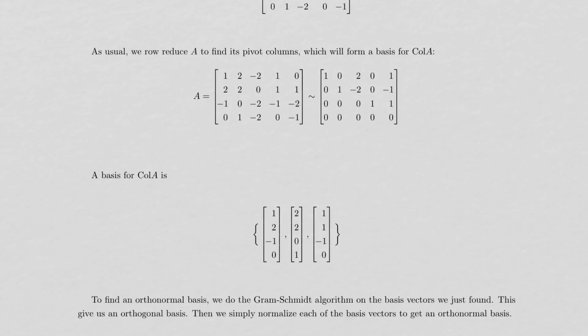So in this case, I can see I've got a pivot here, here, and here. So columns 1, 2, and 4 are the pivot columns of the row reduced matrix, and that means that the same columns 1, 2, and 4 are the pivot columns of A, and so there's my basis.